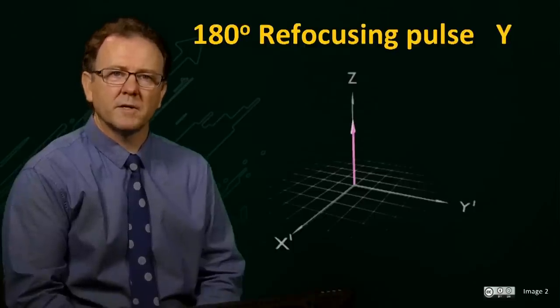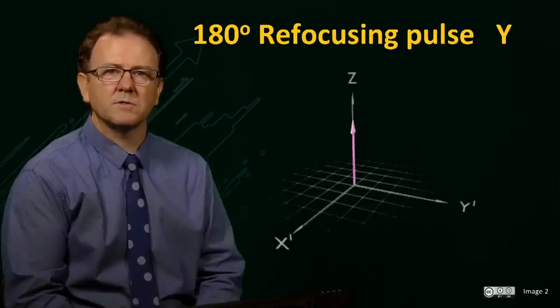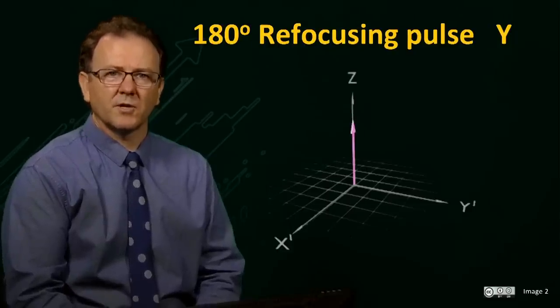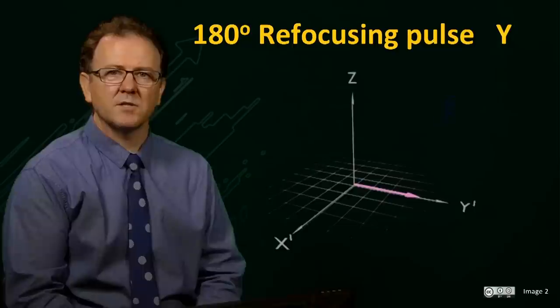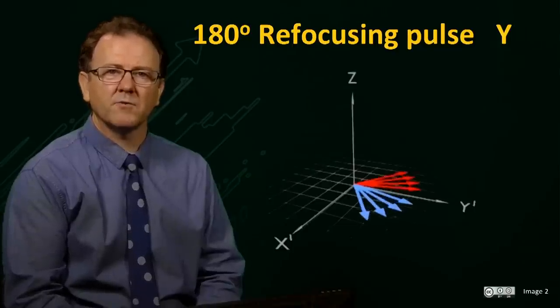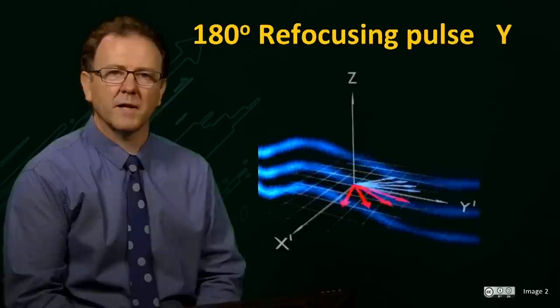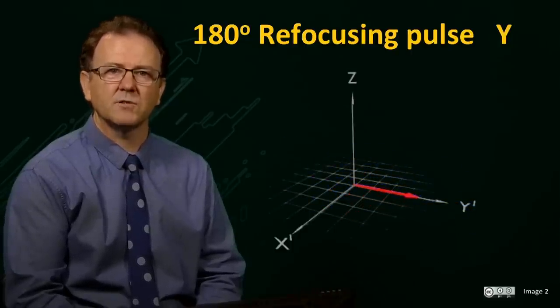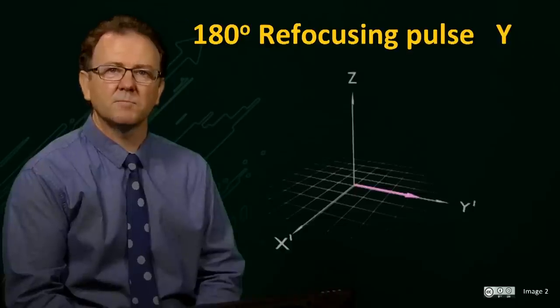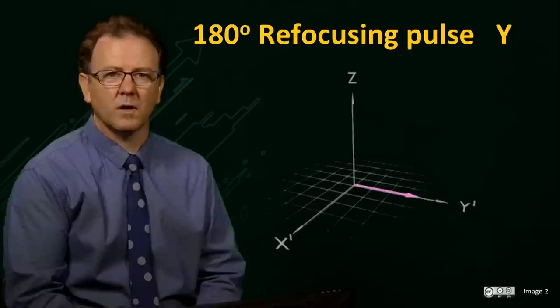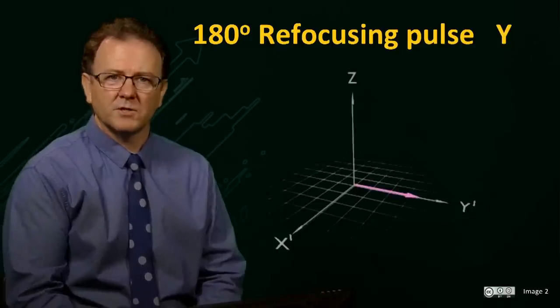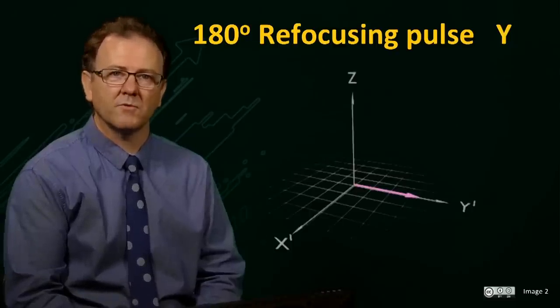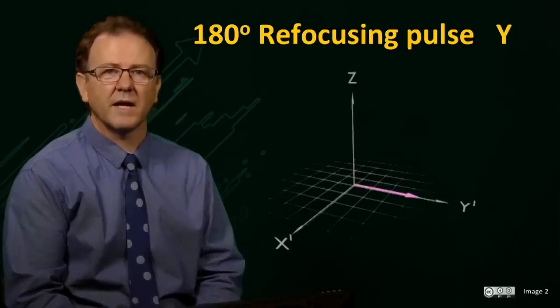This refocusing can also be achieved by applying a 180 degree pulse aligned along the y-primed axis. Again, a 90 degree pulse is followed by a time tau for the spins to dephase, and then a 180 degree pulse along the y-primed axis is applied. This time, the spin vectors are rotated 180 degrees around the y-primed axis, and then converge back along the plus y-primed axis. This would give rise to a spin echo, but with the opposite sign compared to the echo obtained with a 180 degree pulse along the x-primed axis.